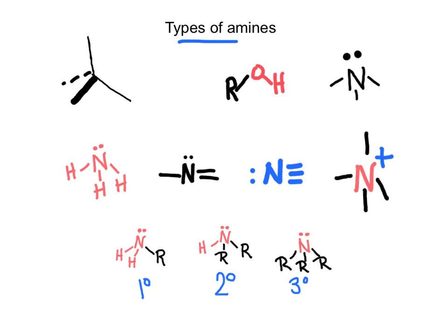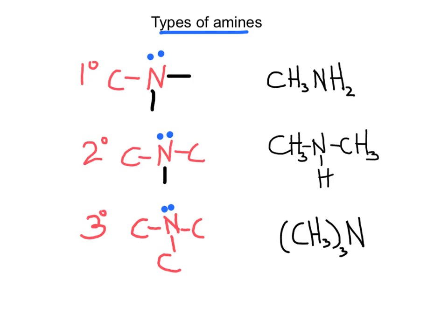When we discuss the family of amines, we can classify amines as organic derivatives of ammonia. In a primary amine, one hydrogen has been replaced by an alkyl group such as methyl, ethyl, or propyl. In a secondary amine, the nitrogen is bonded to two alkyl groups. A tertiary amine is one where the nitrogen is bonded to three different alkyl groups.